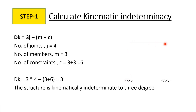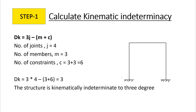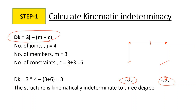The structure is a frame, so to calculate kinematic indeterminacy we use the equation: dk = 3j − (m + c), where j is the number of joints. Here we have four joints and three members (one, two, and three). Constraints refer to support constraints — we have two fixed supports, each providing three constraints. Applying these values, the degree of kinematic indeterminacy dk = 3.